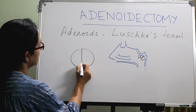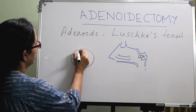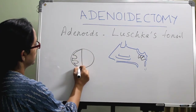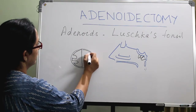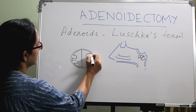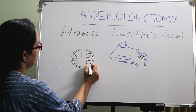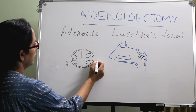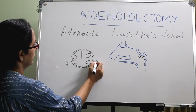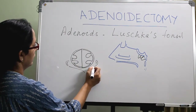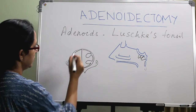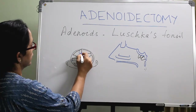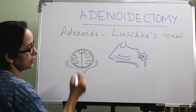Looking from the anterior part, we see the posterior end of the septum, middle turbinate, inferior turbinate on both sides, the Eustachian opening, soft palate, and here the adenoids are situated. If you see it like this — the adenoids are located at the junction of roof and posterior wall of the nasopharynx.